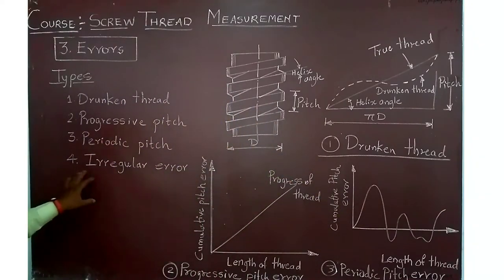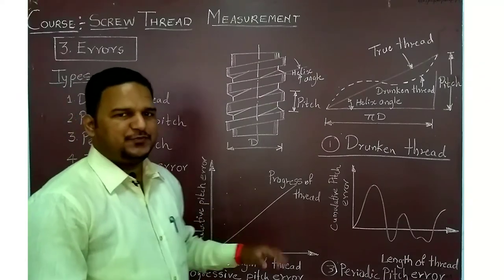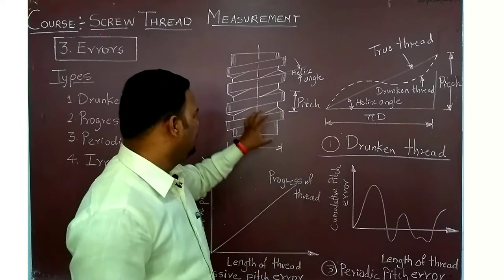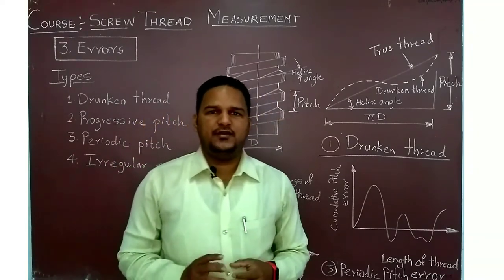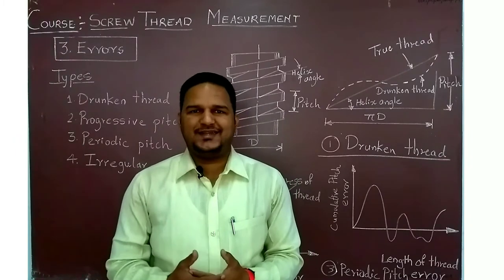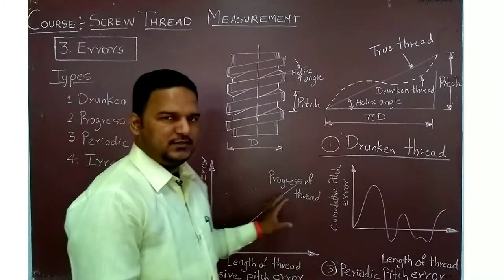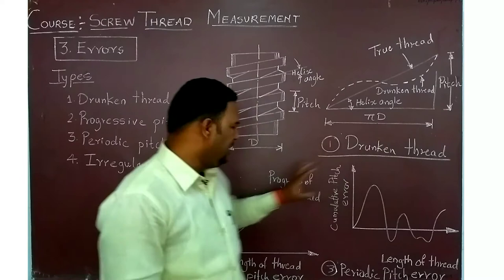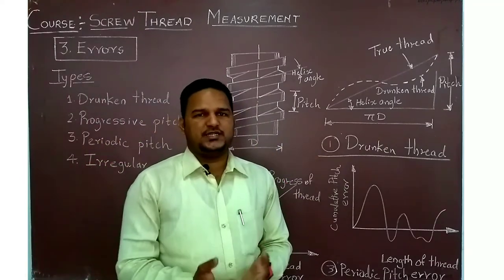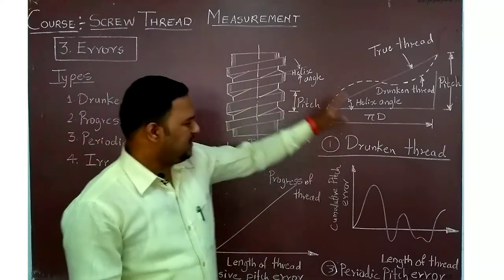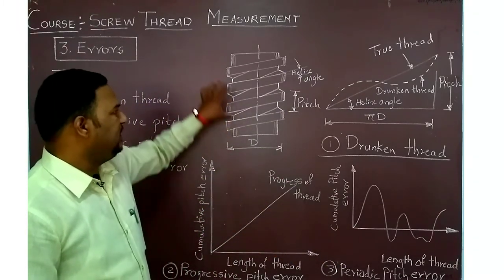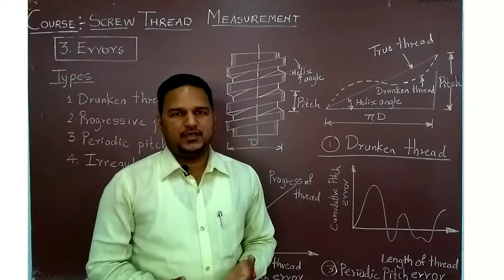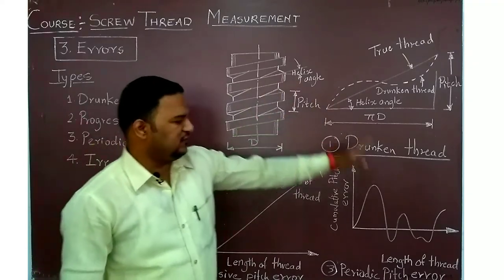The last type is irregular error — you cannot predict its formation on the screw thread; there is irregularity in nature. During the usage or coupling of a nut and bolt assembly, you can find all these errors. Separate instruments are sometimes required to identify and measure these errors. All these errors reduce the life of the assembly, as the primary function of a screw thread as a fastener gets affected.